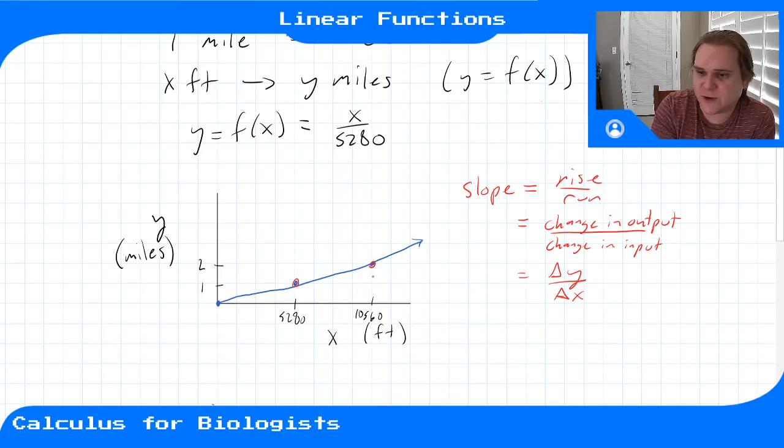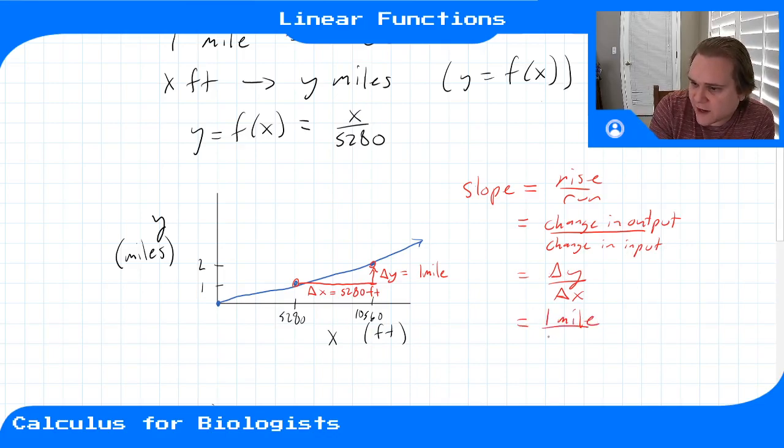We pick any two points on our graph. What's the change in y? From here to there, the change in y was one mile. And the change in x? We went up by 5280 feet. So our slope is rise over run, change in output over change in input, delta y over delta x. That's going to be one mile divided by 5280 feet, or one over 5280 miles per foot.